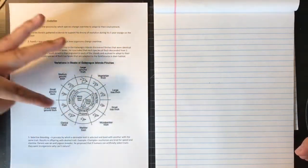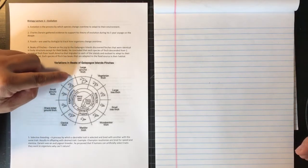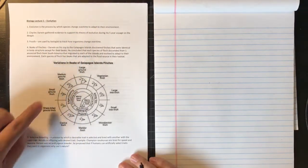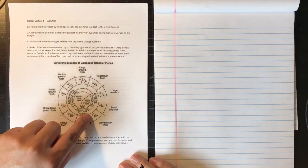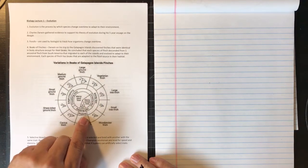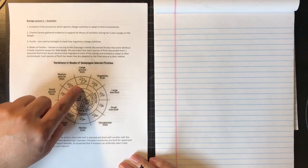Alright, so let's take a look at this wheel of finches. So you'll see here that these are the different types of finches and this is the type of bills they have. You have edge crushing, biting tips, probing, and then crushing beaks.